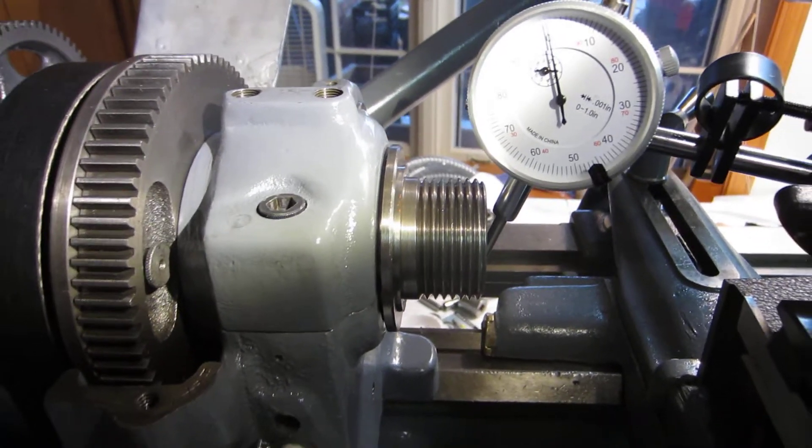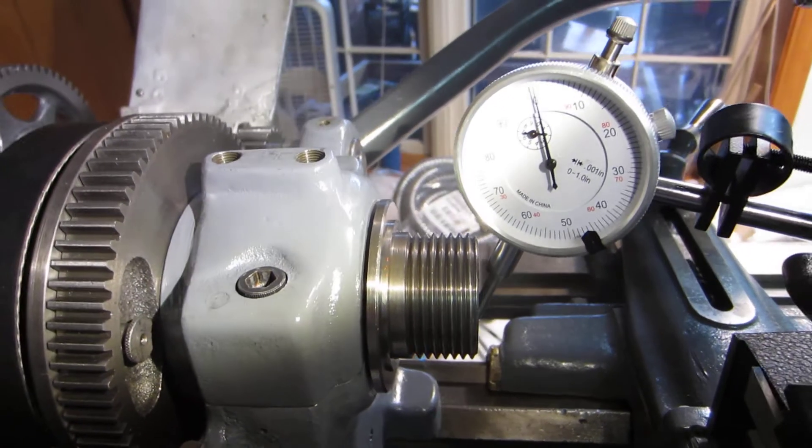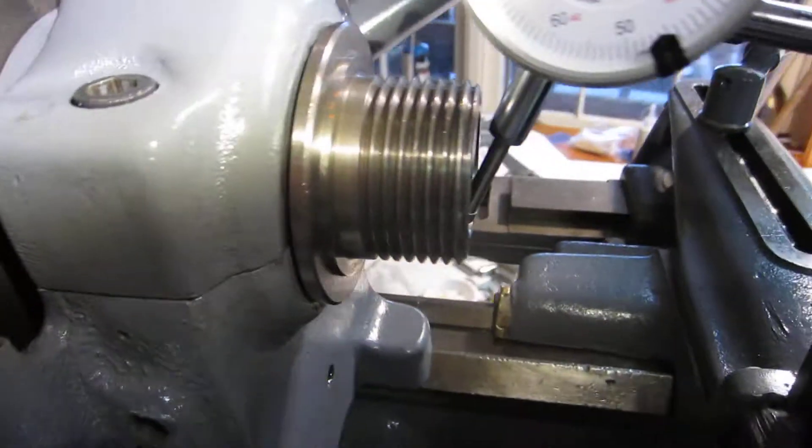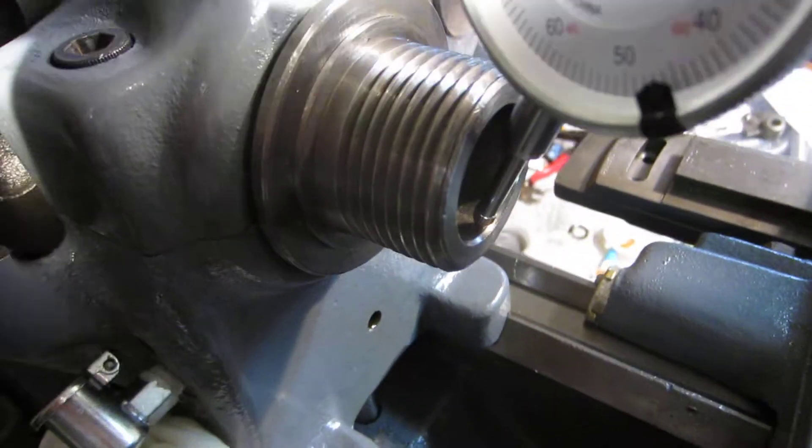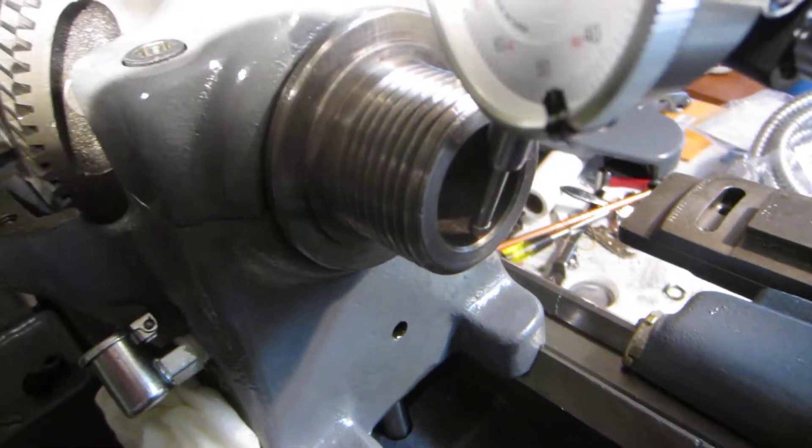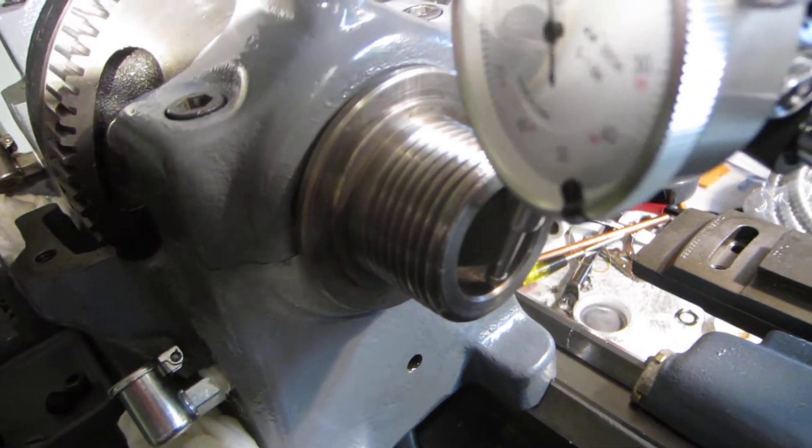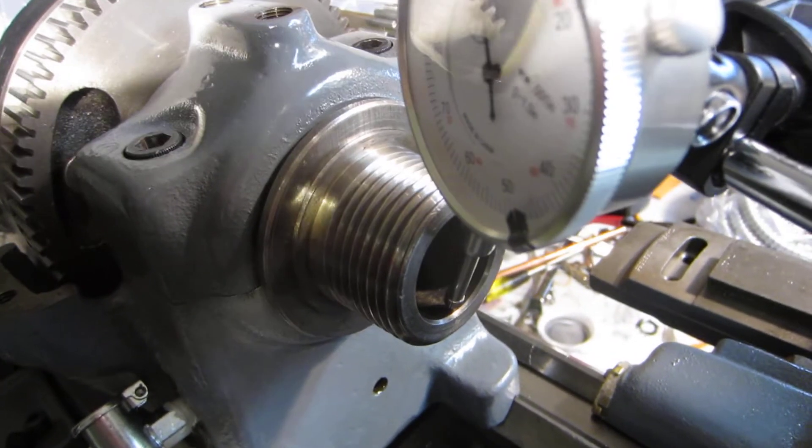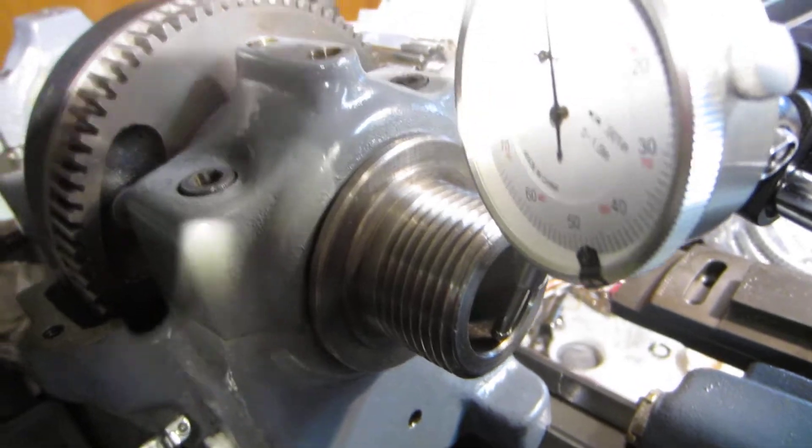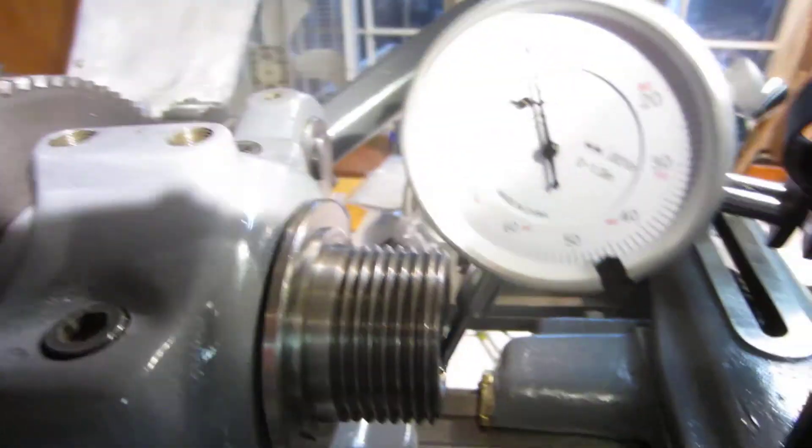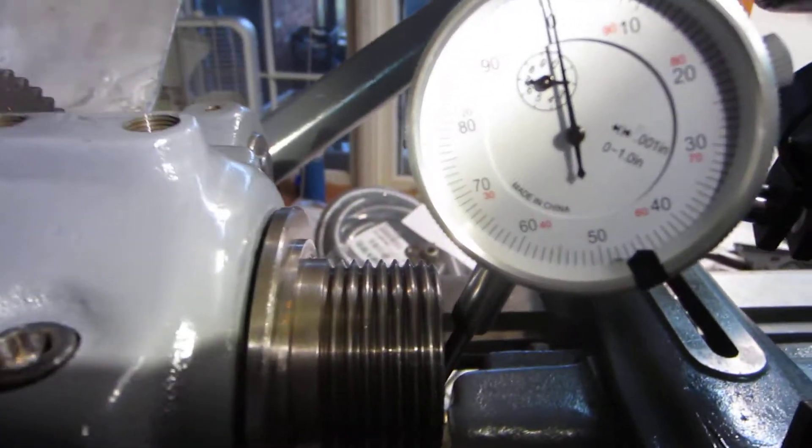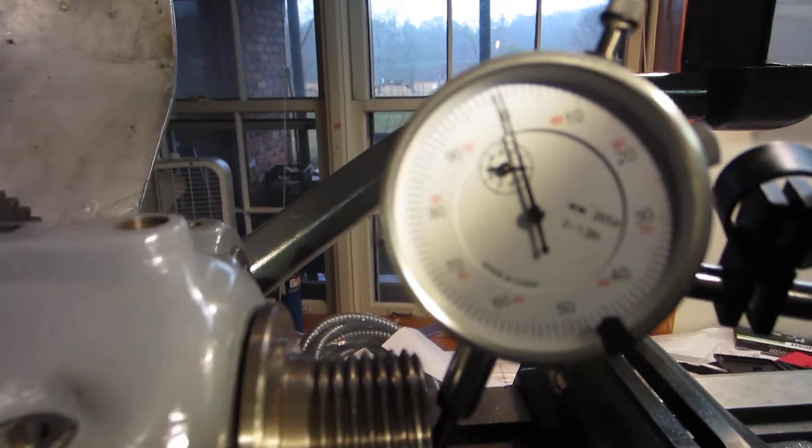Okay, let's try this again. A friend of mine, John, suggested that I put it on the inside of the collet closer so that I could have a machined surface, something that's supposed to be trued to see what the play is in that. So let's turn this thing on and see what happens.